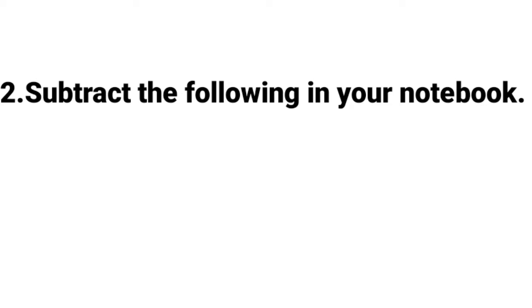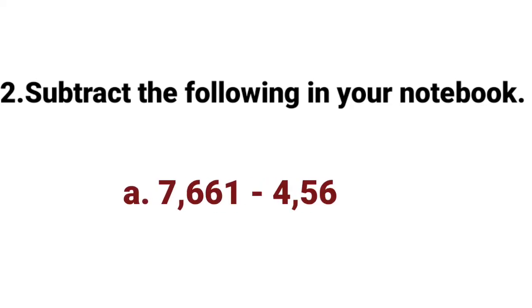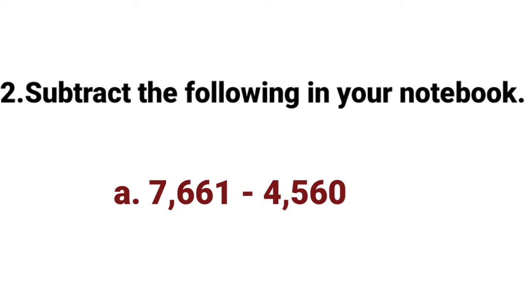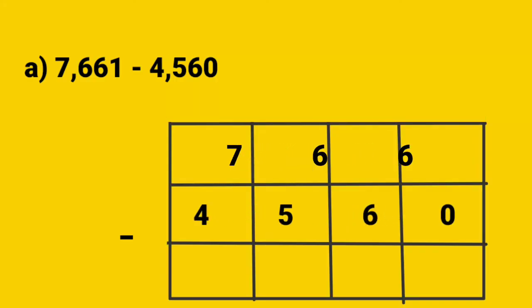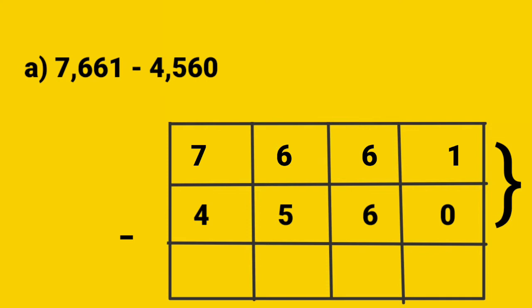In A, 7661 minus 4560. Now let's see the answer. First, we have to subtract from the 1's place. 1 minus 0 — 1 minus 0 is equal to 1, since when we subtract 0 from a number, the answer is the number itself.